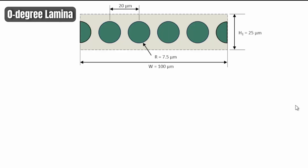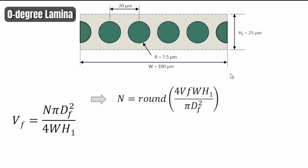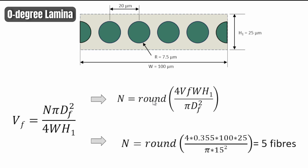Looking at the calculation behind the fiber count: we use the typical volume fraction equation where n is the number of fibers, Df is the fiber diameter, w is the width, and h is the height. Rearranging gives n, and since we need a whole integer — you can't have a quarter of a fiber — we round the result. Substituting all values with a volume fraction of 0.335 (5.5%), we end up with five fibers: four interior ones plus two half-fibers on the edges making a fifth.